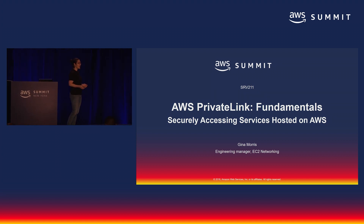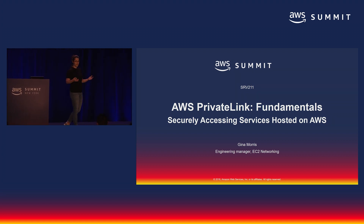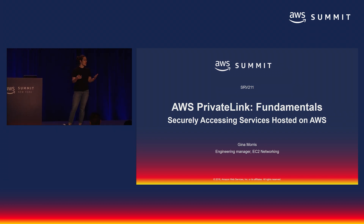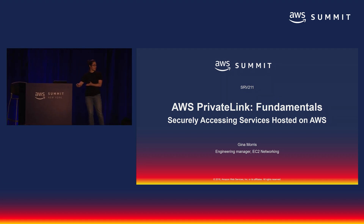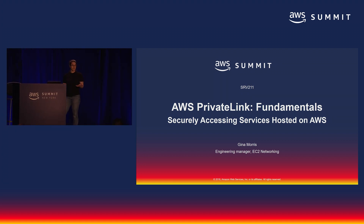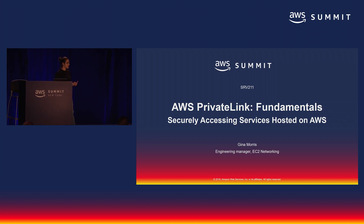PrivateLink allows you to easily and securely use, offer, or share services between your VPC and other VPCs. You can also securely use AWS services from inside of your VPC without letting any of your traffic traverse the internet.